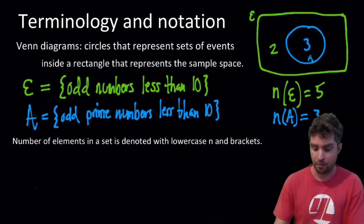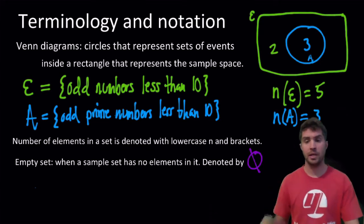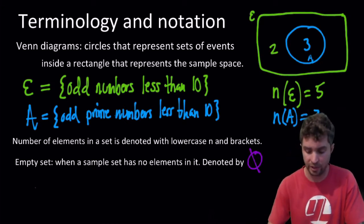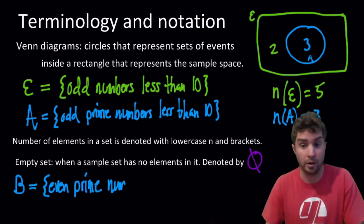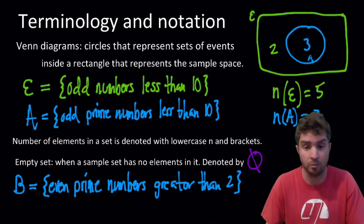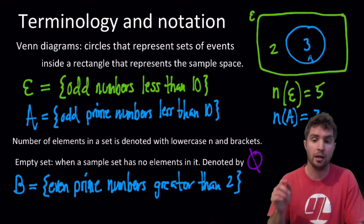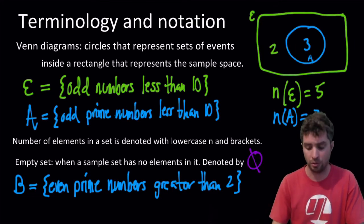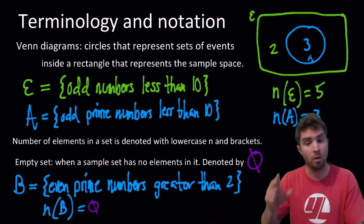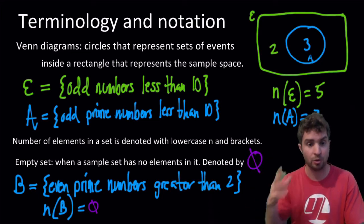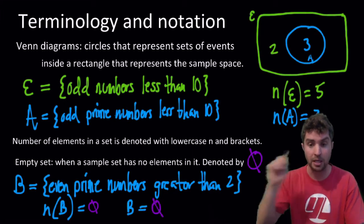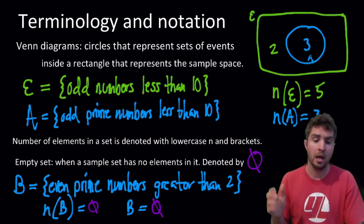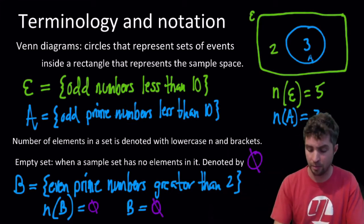We represent these numbers with n and then brackets. The number in the sample space is 5, and the number in event A is 3. Now, there can be a set with zero outcomes in it. You might have an event such as even prime numbers greater than 2 — what are the chances of pulling one out? Zero, because there are zero outcomes in that event. So we could say the number in B is zero, or we can say it equals the empty set symbol — a zero with a slash through it — because there are no elements in it.